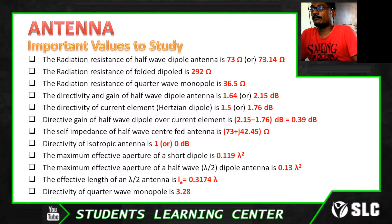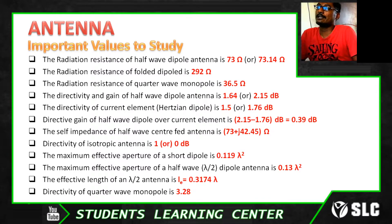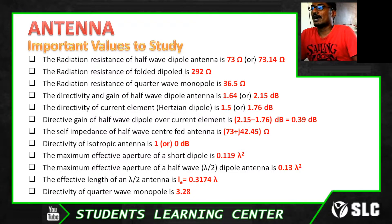The directivity of a half wave dipole over the current element is 0.39 dB. The current element value is 1.76, so 2.15 minus 1.76 gives 0.39 dB.